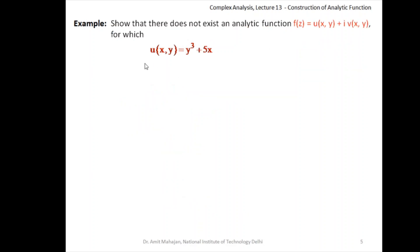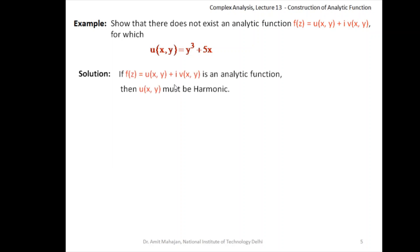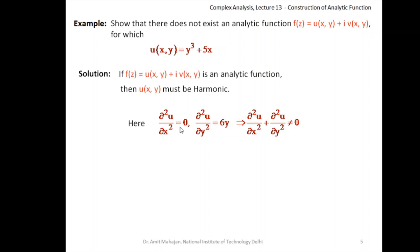One last example: show that there does not exist an analytic function for which u = 5x + 3y³ (or similar given u). We can immediately check that this u function is not harmonic. If a function is analytic, u must be harmonic. Checking: u_x = 5 so u_xx = 0; u_y = 3y² so u_yy = 6y. Their sum is 6y, which is non-zero. So u is not harmonic, and therefore f(z) cannot be an analytic function, because if f(z) is analytic then u must be harmonic by theorem.